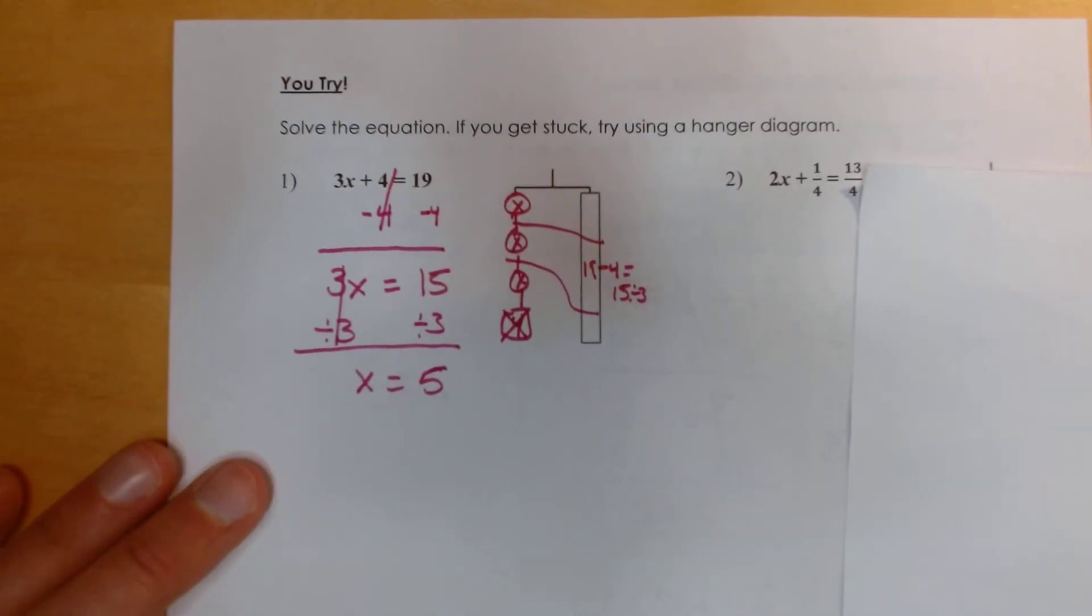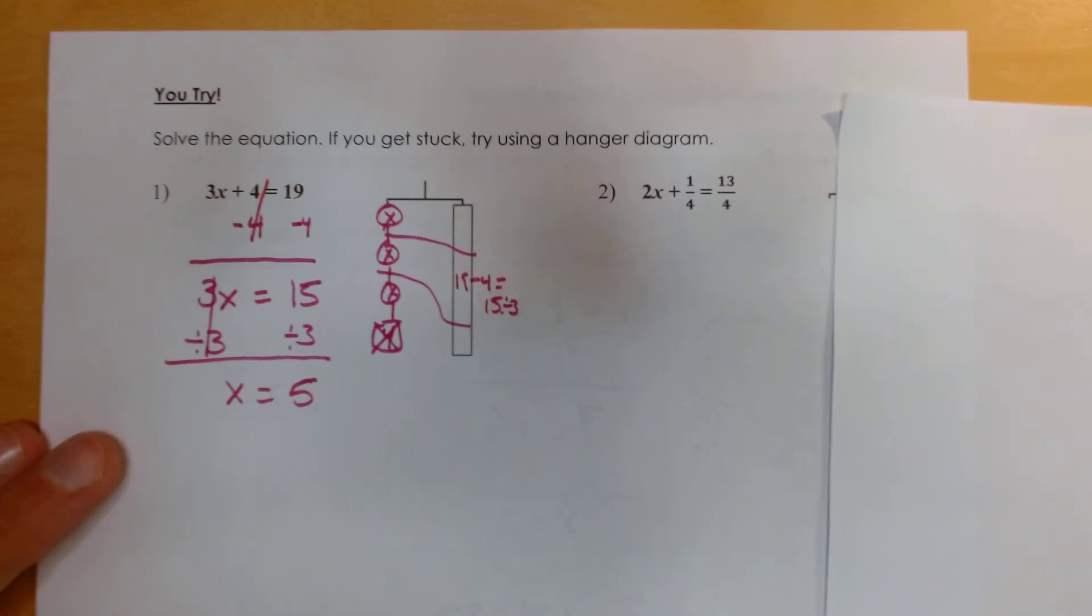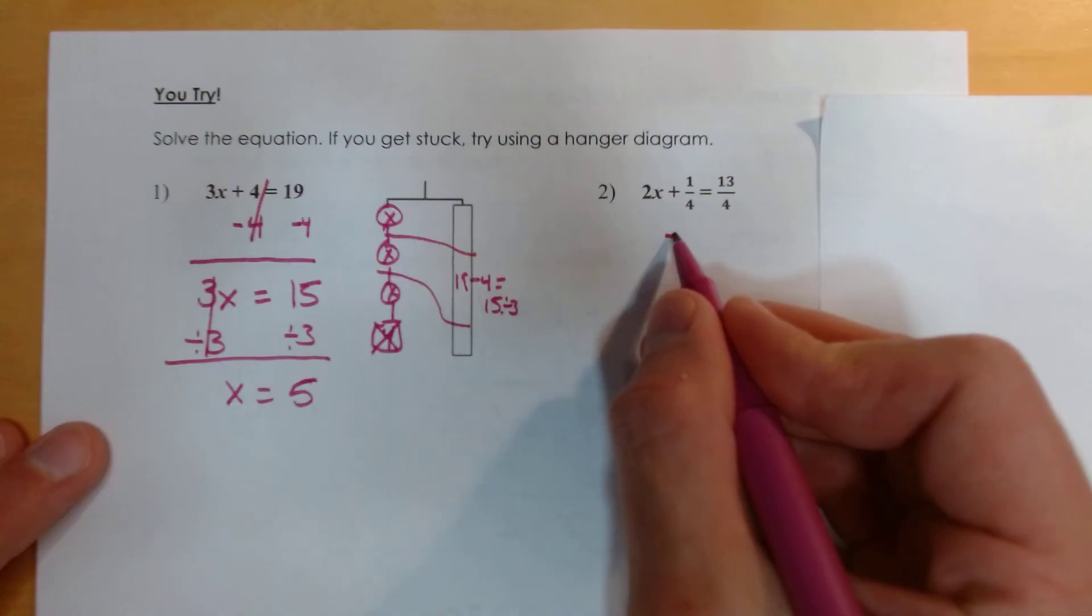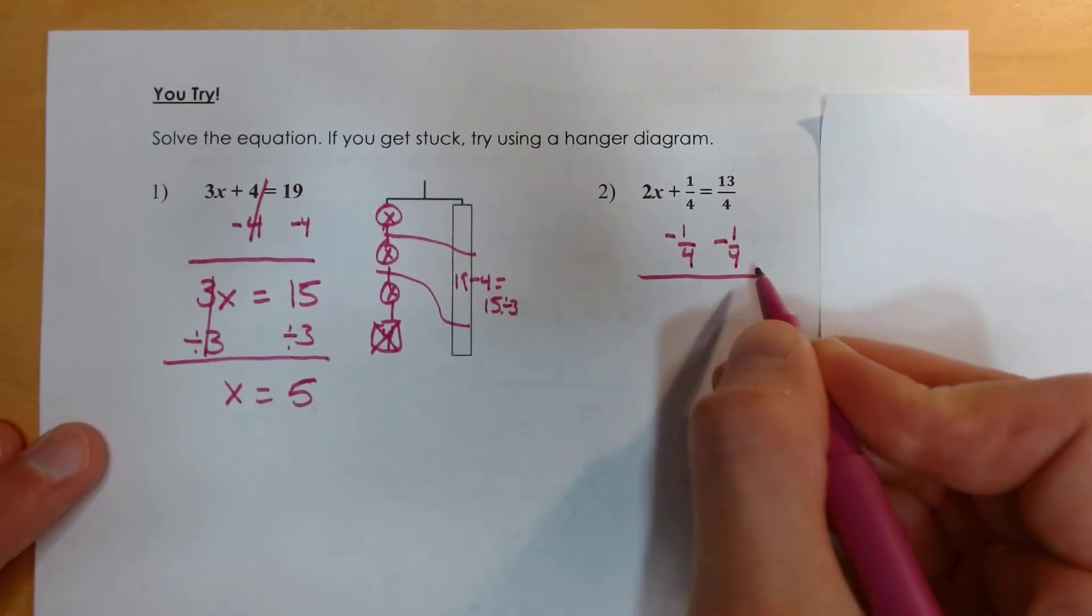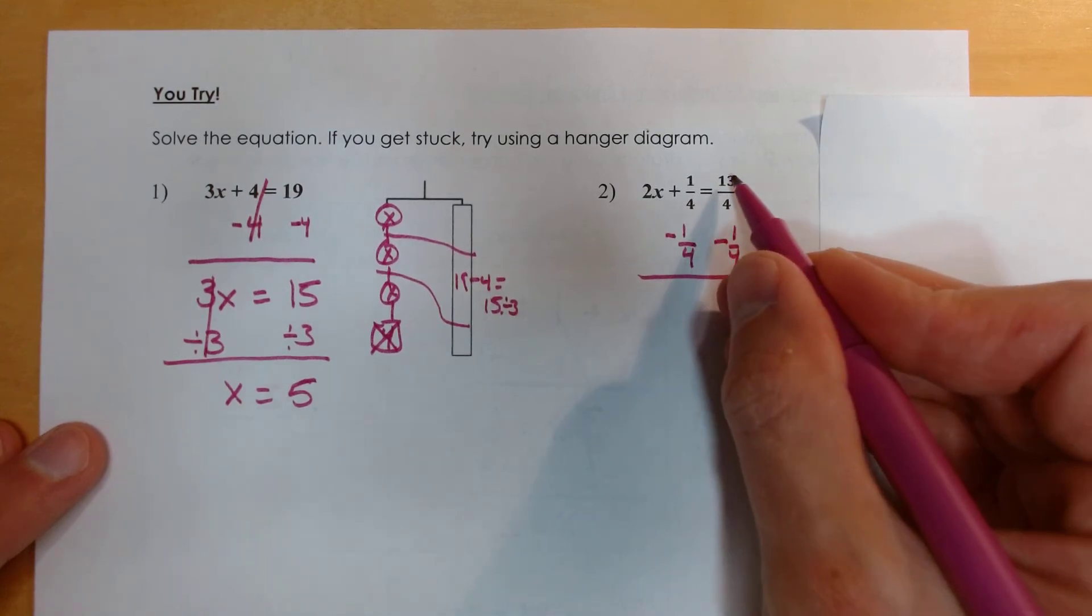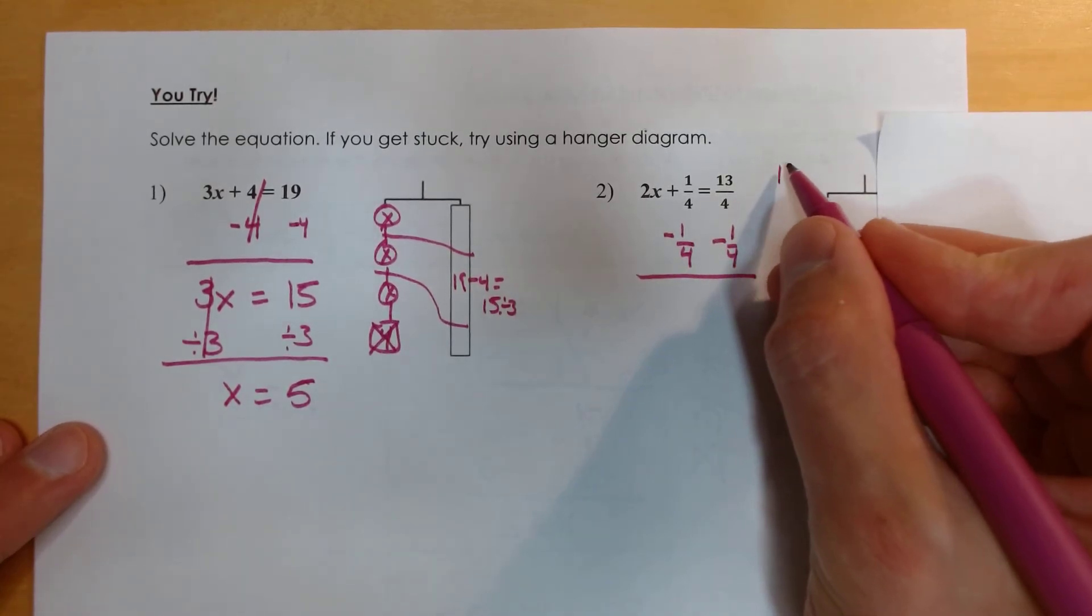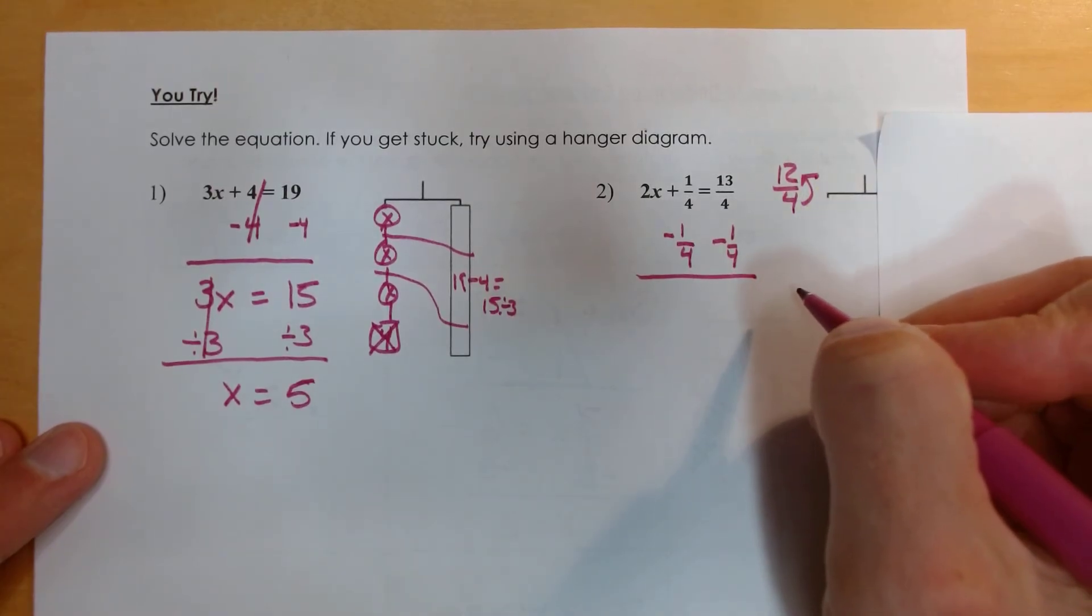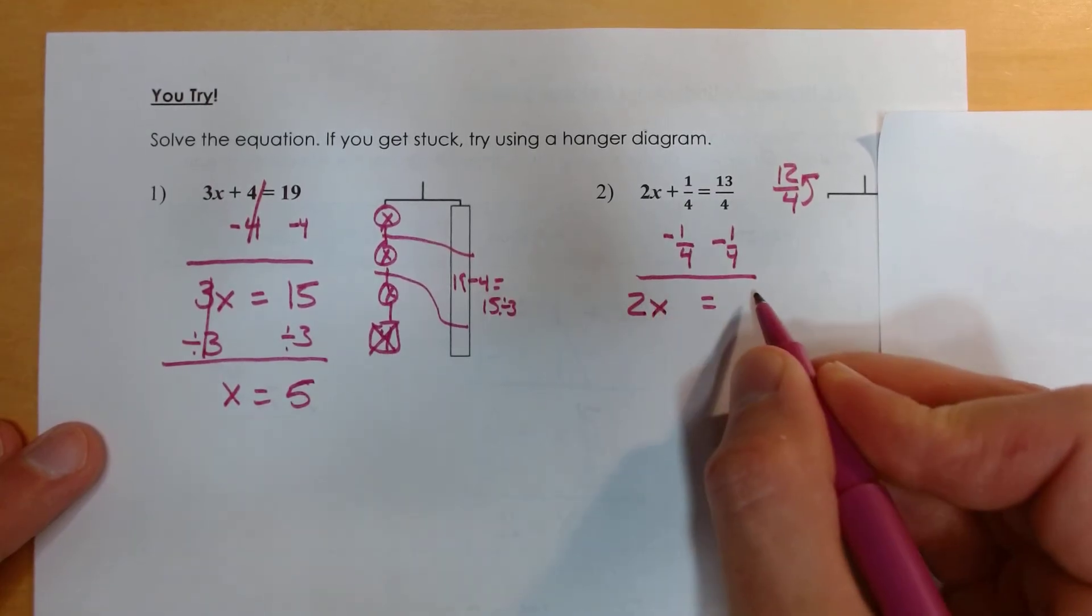Now, I know you might be saying to yourself, well, that was easy to do in my head. What if you had one with fractions, right? So maybe you would try one with a fraction. So follow our same steps. Let's subtract away the fraction we have. Now remember, when you add and subtract with fractions, you always want to make sure you have the same denominator. And all we're going to do is subtract our numerator. So 13 minus 1 would be 12 over 4. Let me do this off to the side here. So 12 over 4, that's improper. How many 4s go into 12? That would be 3, right? So we'd say 2x equals 3.